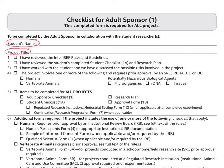The adult sponsor will then attest to the following: review the Intel ISEF rules and guidelines, at least those that are pertinent to this project; review the student checklist Form 1a and research plan; and discuss with the student possible risks involved in the project. For projects involving human subjects, vertebrate animals, or potentially hazardous biological agents, the adult sponsor will also attest to having completed the forms required prior to experimentation.